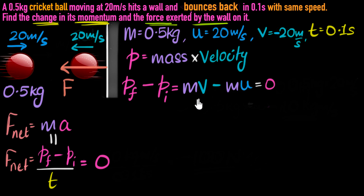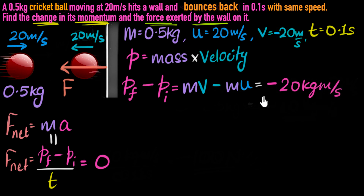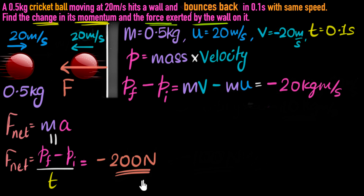Now with the correct values, the change in momentum works out to negative 20 kilogram meters per second. Dividing by 0.1 seconds, the force is negative 200 Newtons. The negative sign again tells us the force is in the opposite direction to the initial velocity — which makes sense. The key lesson: since momentum is mass times velocity, and velocity depends on direction, whenever the direction becomes opposite, remember to put a negative sign, so you don't make this mistake.